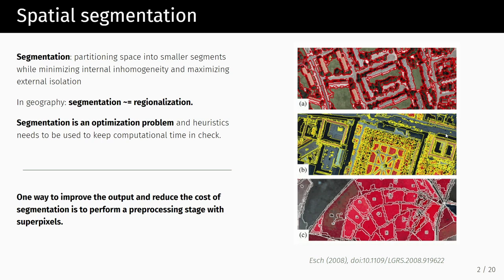The idea is to bring together similarly looking spaces and treat them as homogeneous areas — keeping internal homogeneity but external isolation. And thinking about segmentation more broadly, we can also think about it as regionalization, when we want to develop similar consistent regions that are homogeneous internally but different from surrounding regions.